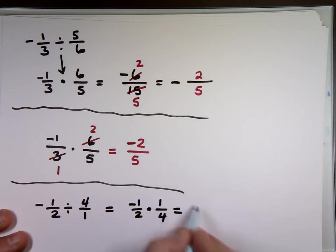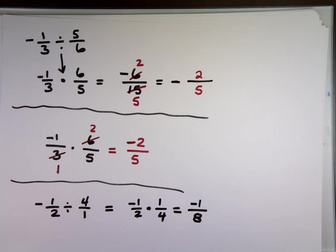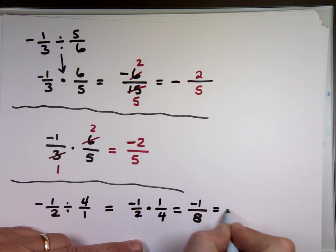And now we multiply. What's minus one times one? Negative one. What is two times four? Eight. Negative one-eight. You can put the minus in the top. You can put the minus in the front. It doesn't matter.